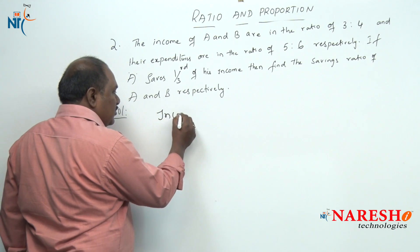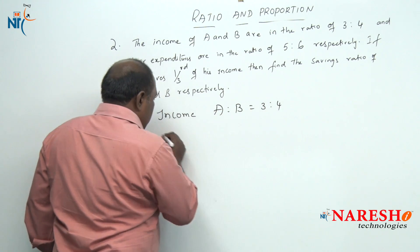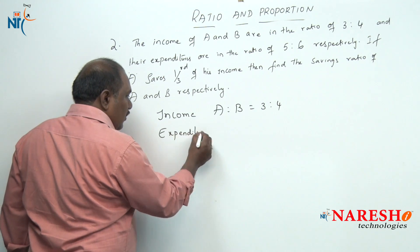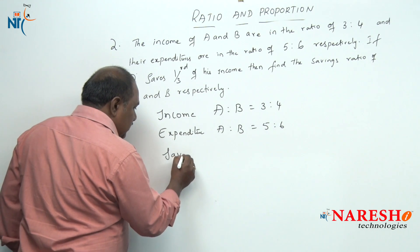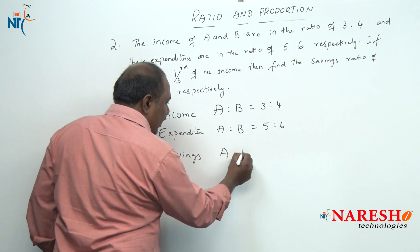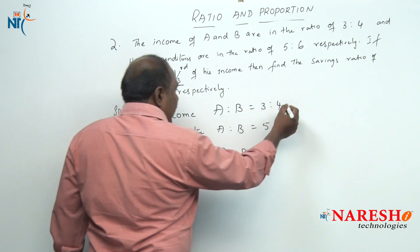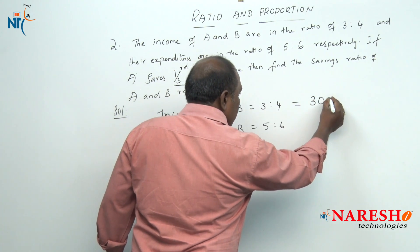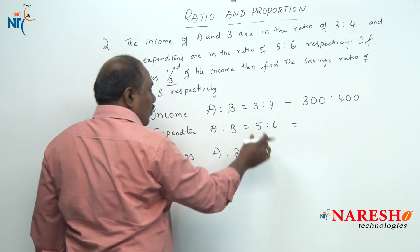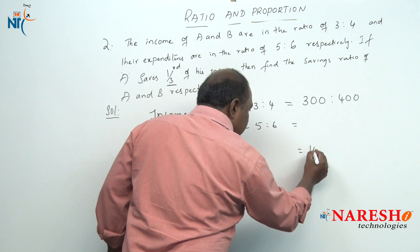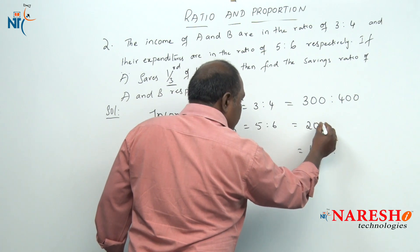Let us quickly solve this problem. The income ratio of A and B is 3 is to 4 and the expenditure ratio is 5 is to 6. We need to find the savings ratio. A saves one-third of his income. Assuming the income of A and B as 300 and 400 respectively — one-third of 300 is 100, so A saves 100 rupees. His income is 300, so his expenditure is 200.